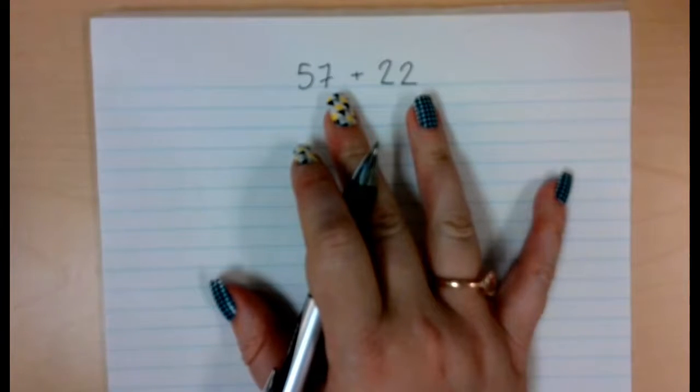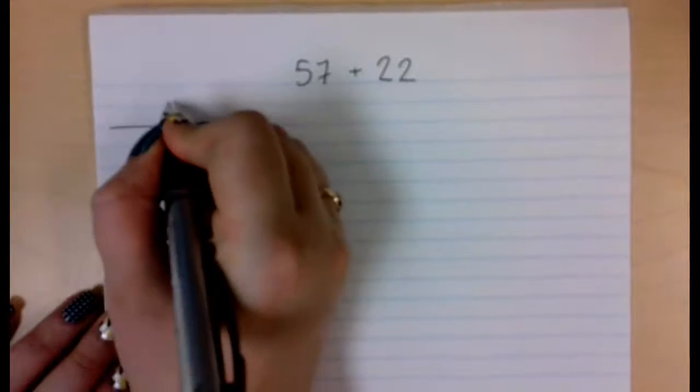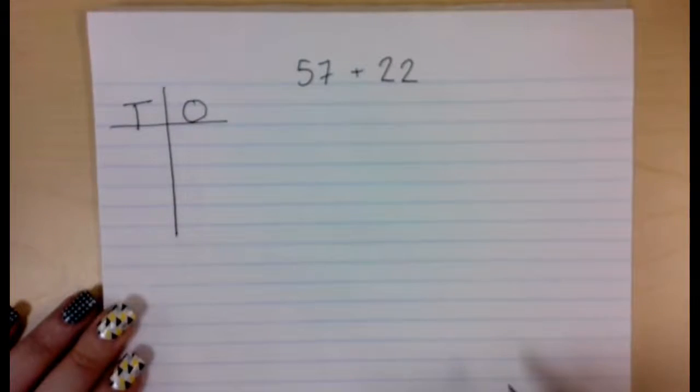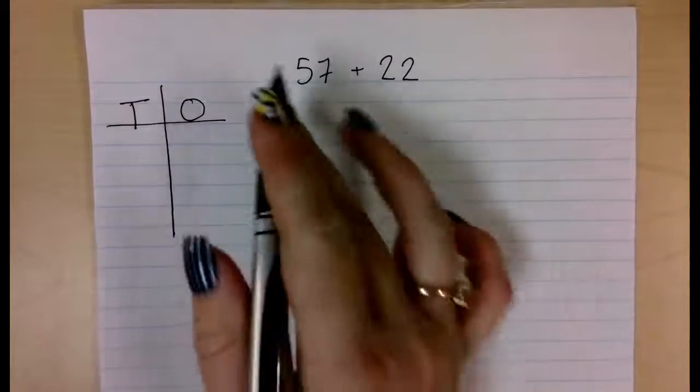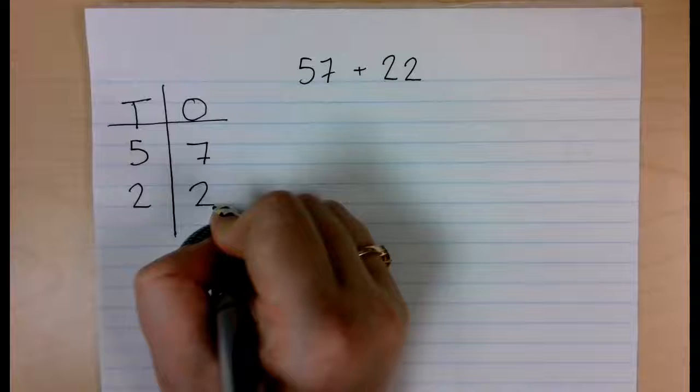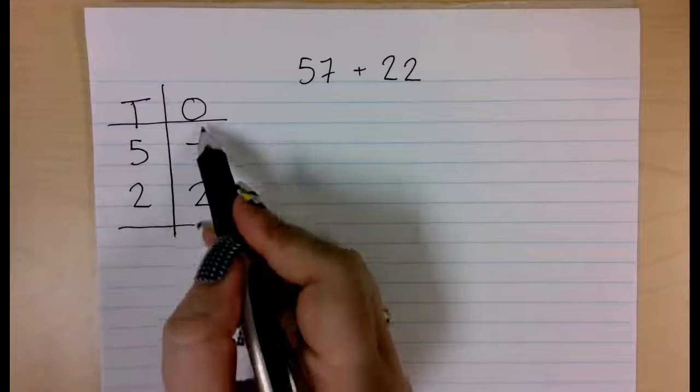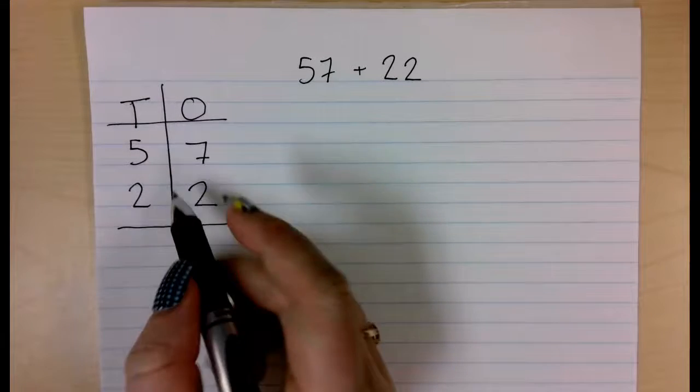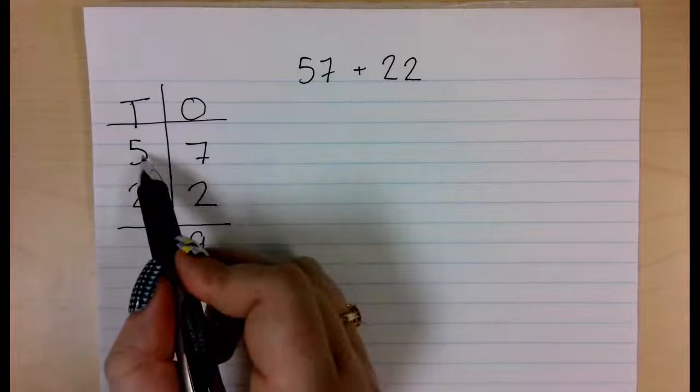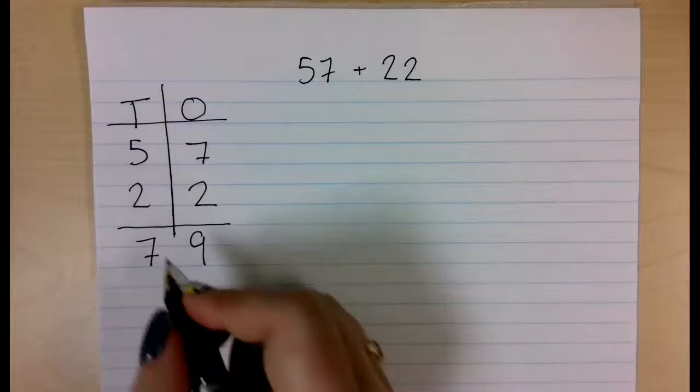57 plus 22. So we are going to do our place value chart, 1s and 10s. I am going to put my number there. So 57 and 22. When I add my 1s, 7 plus 2 is 9. When I add my 10s, I have 5 plus 2, and that is 7. And I now have 79.